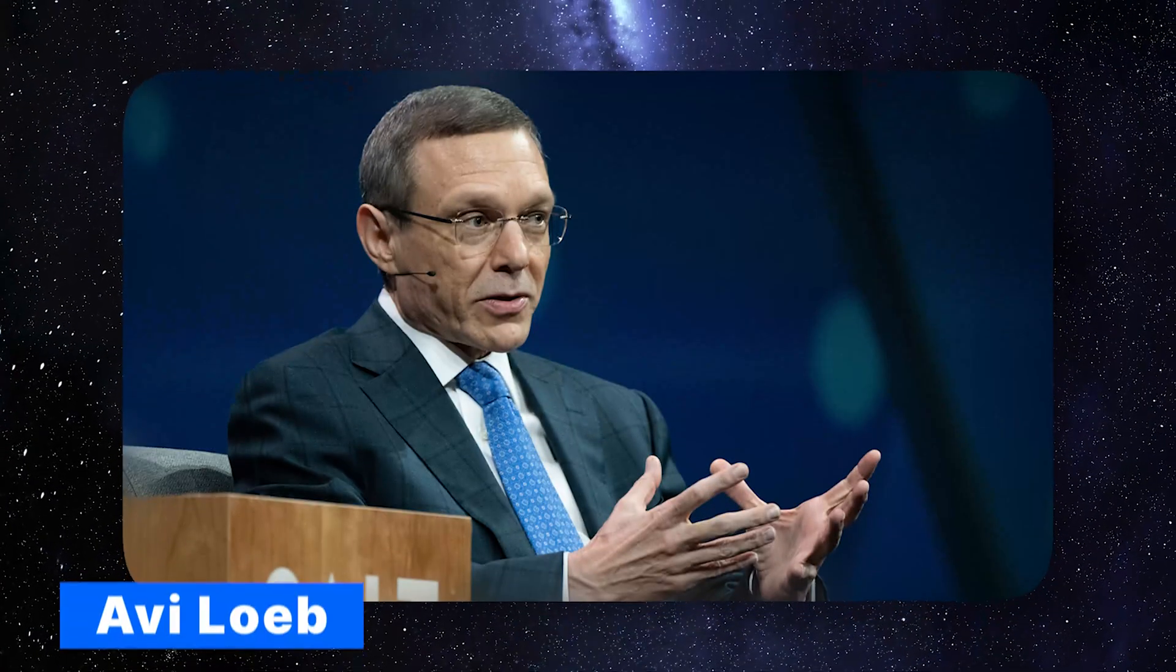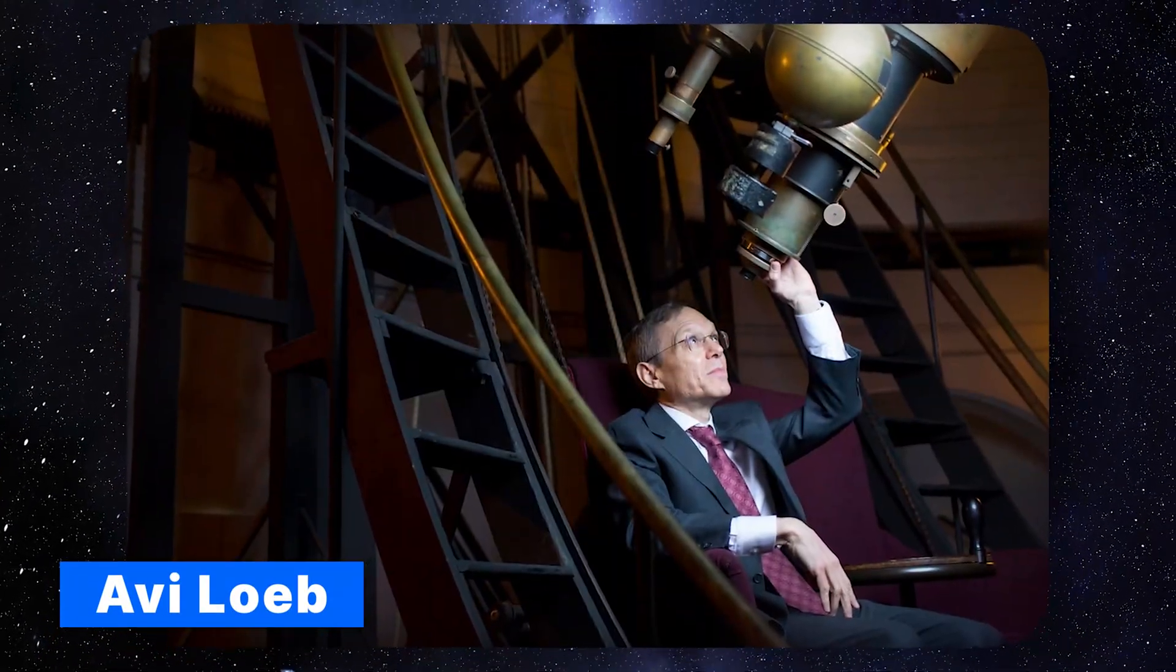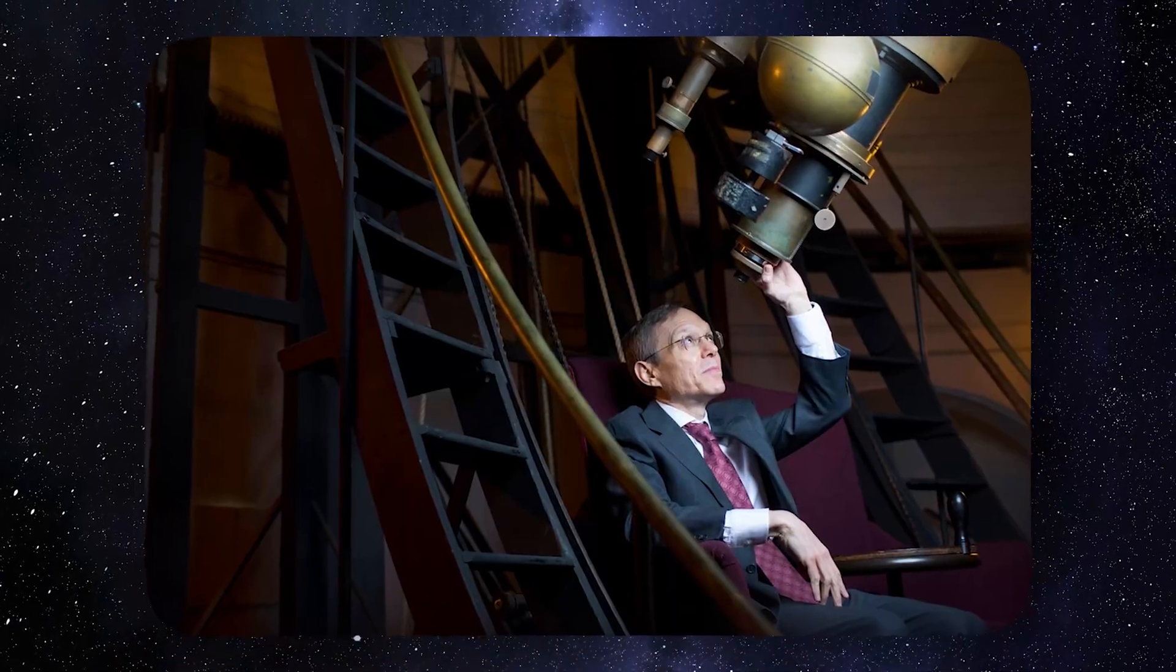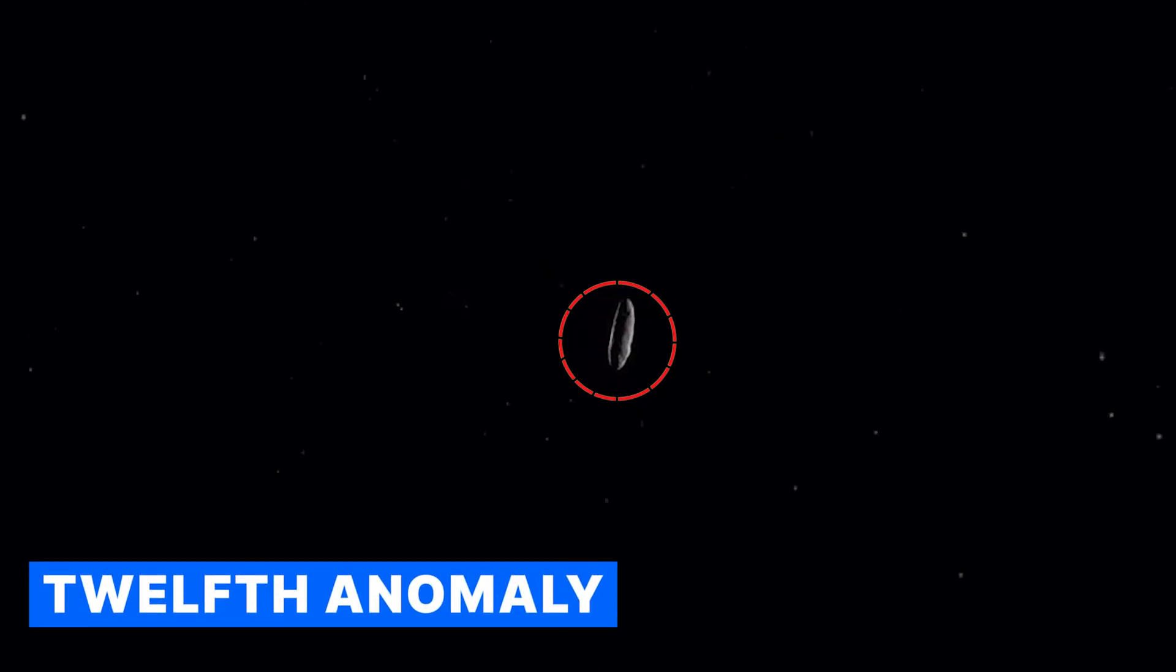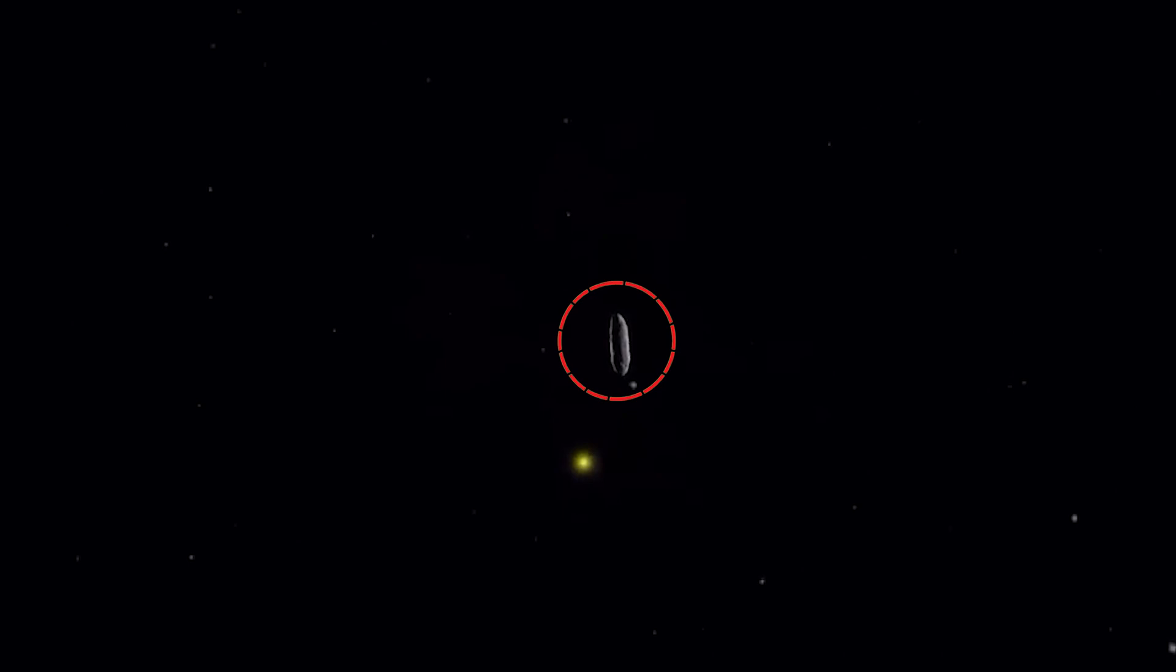But then Avi Loeb, the guy who ran Harvard's astronomy department, started looking at the data. 4,000 observations from 227 observatories around the globe of 3I Atlas. By the 12th anomaly, he realized he might be looking at something that wasn't natural at all.